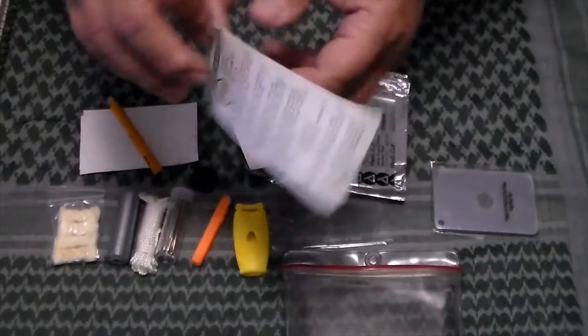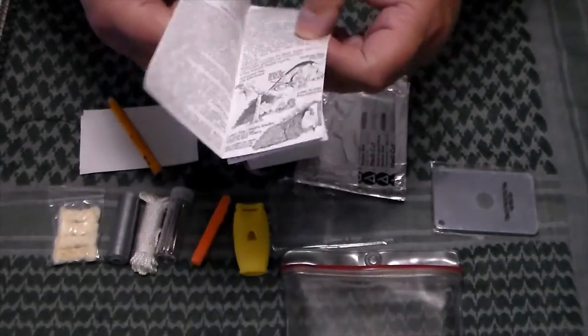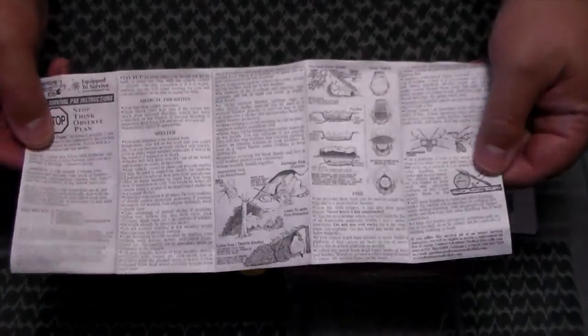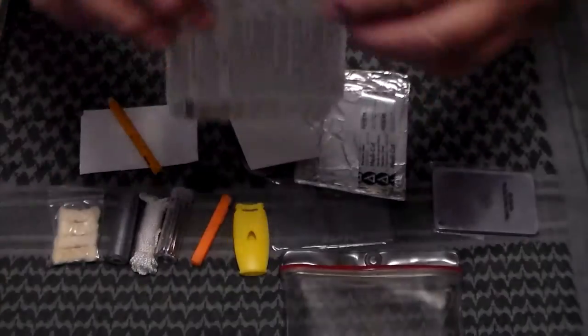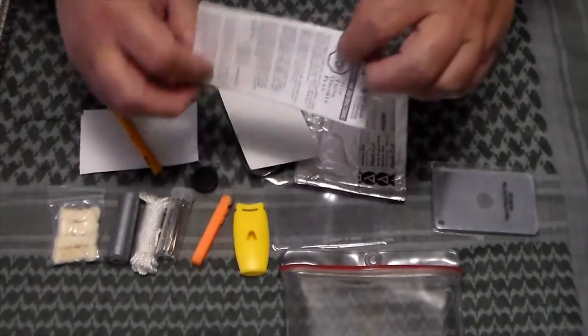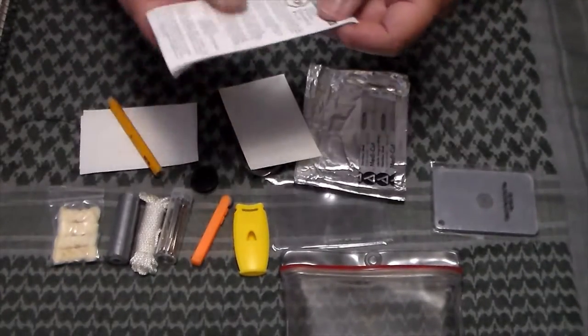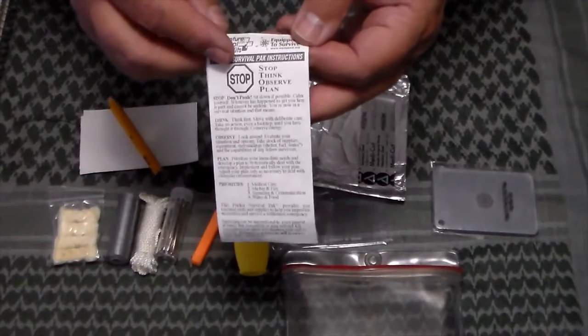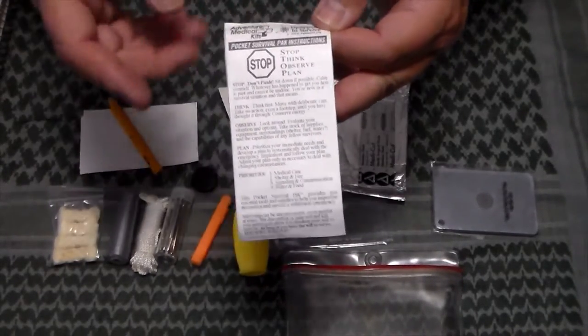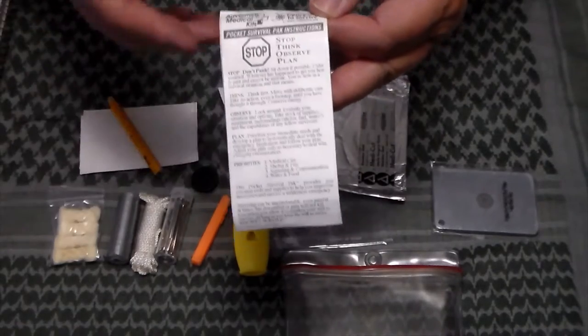It also comes with a survival sheet, just basic survival information, knots and air to ground signaling and how to use a few of the items in the kit. And on the top here, STOP: think, observe, plan, that really works.